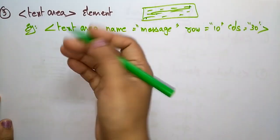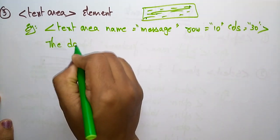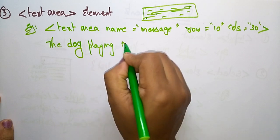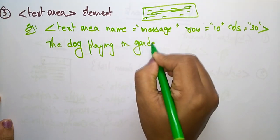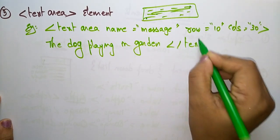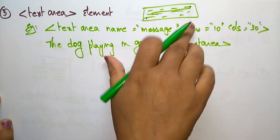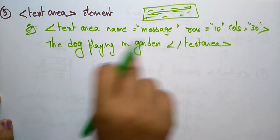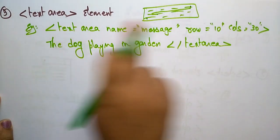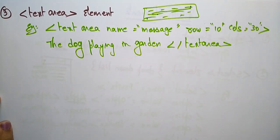Let's write a sample message like 'the dog playing in garden' — this message will appear in the textarea. Then close the textarea tag. Whatever you want to display, write it between the opening and closing textarea tags along with the rows and columns attributes.